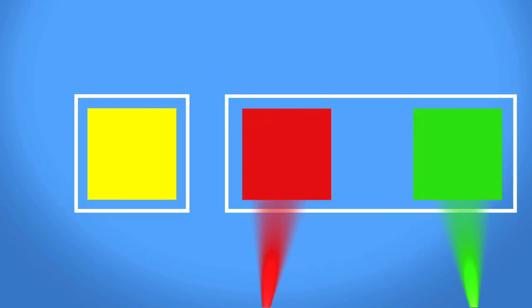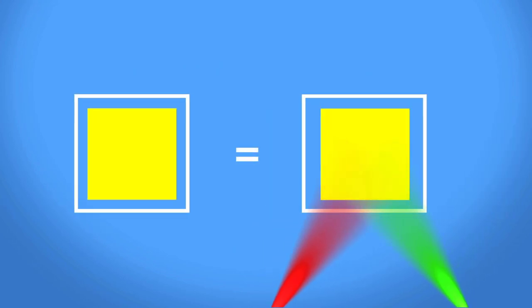For example, a yellow pixel is displayed by turning a mirror toward the projection path when red and green light is landing on it.